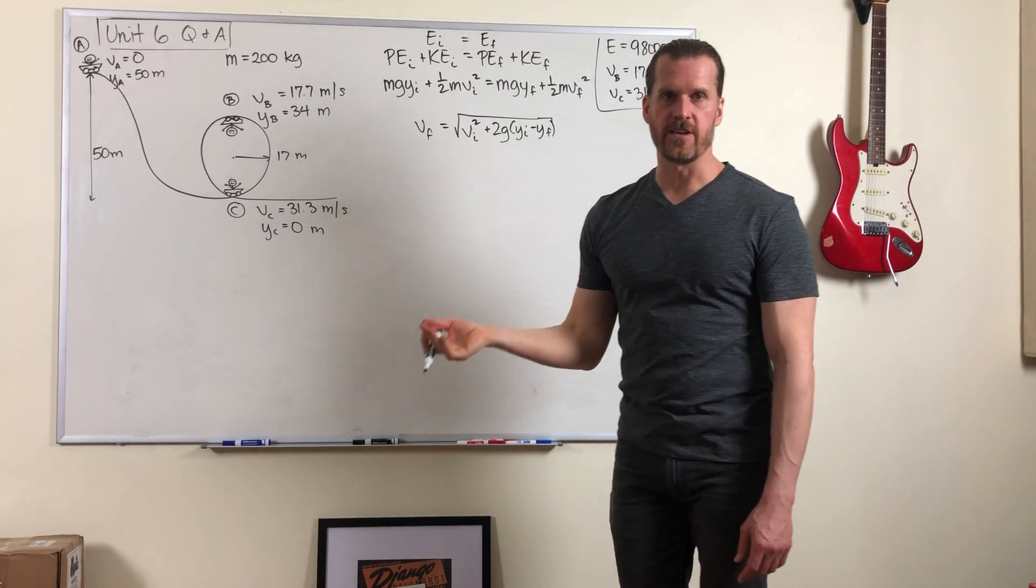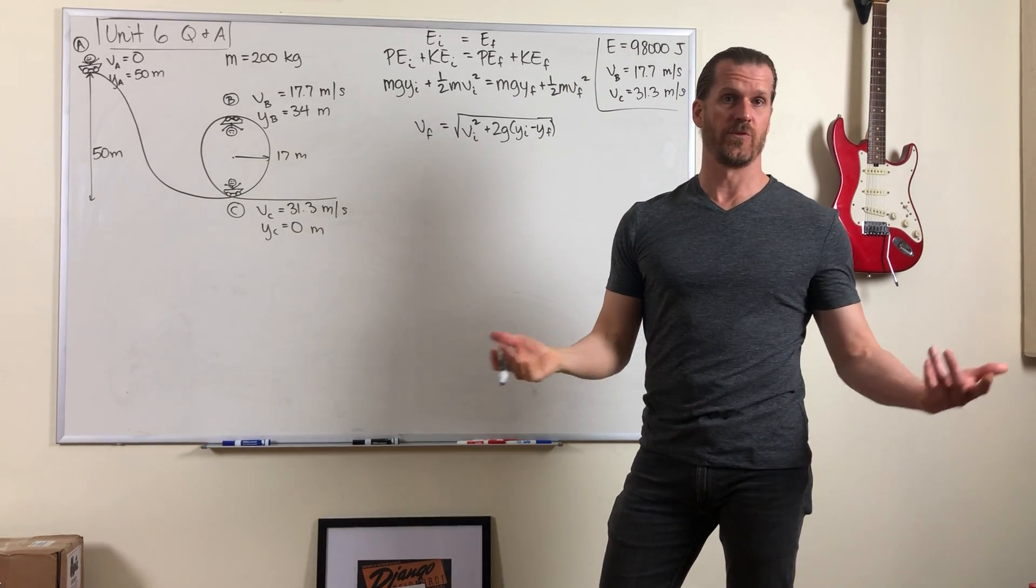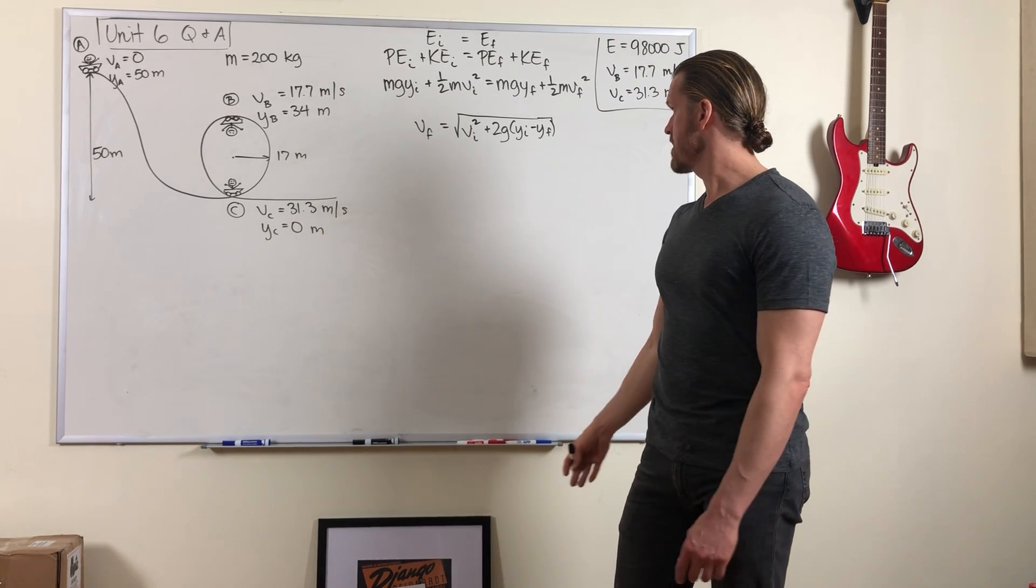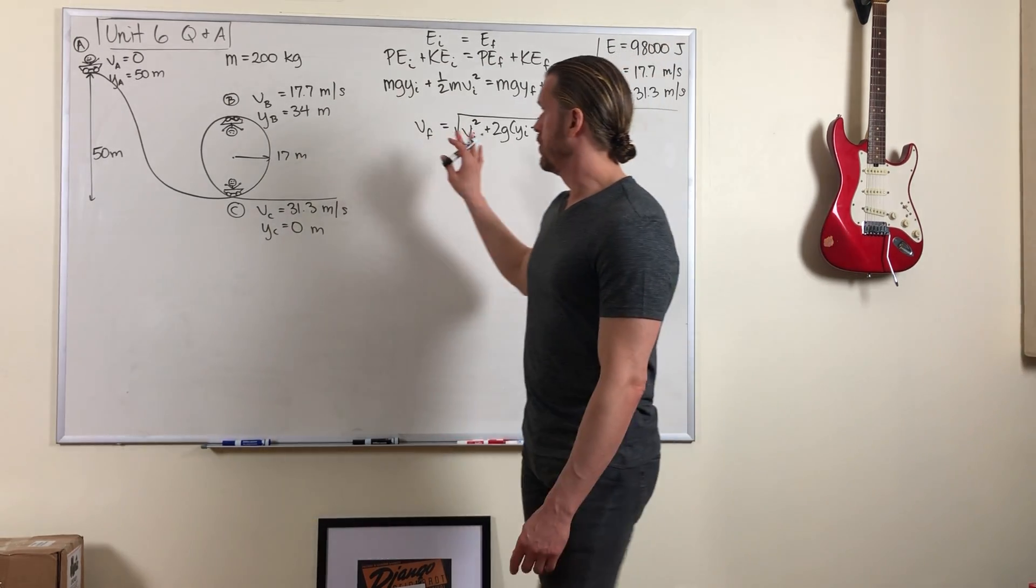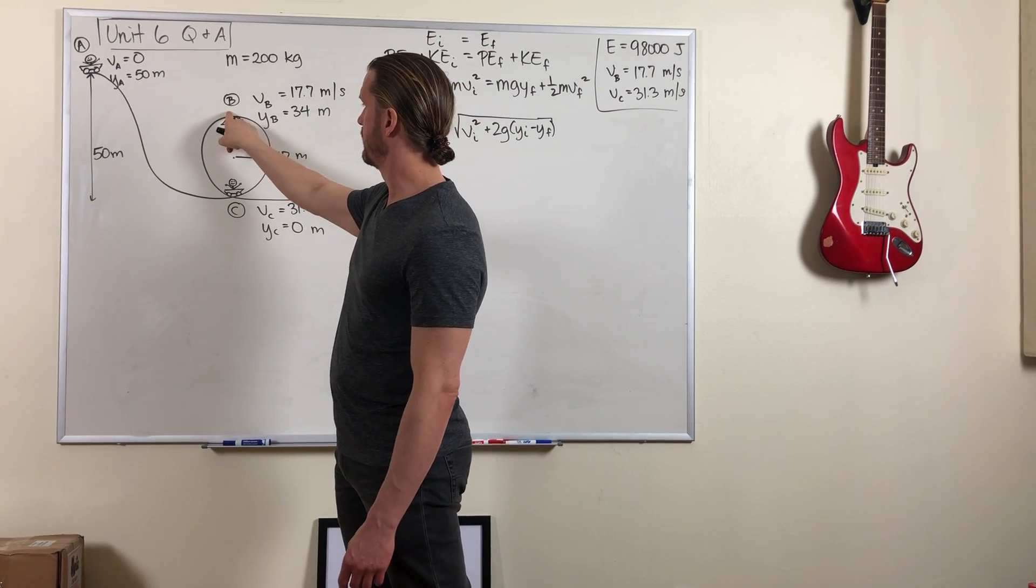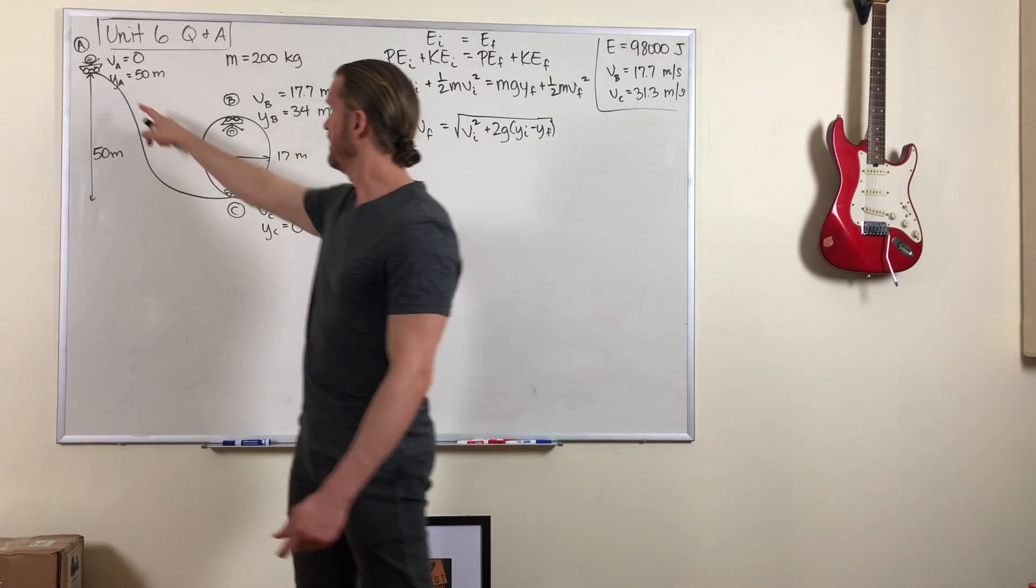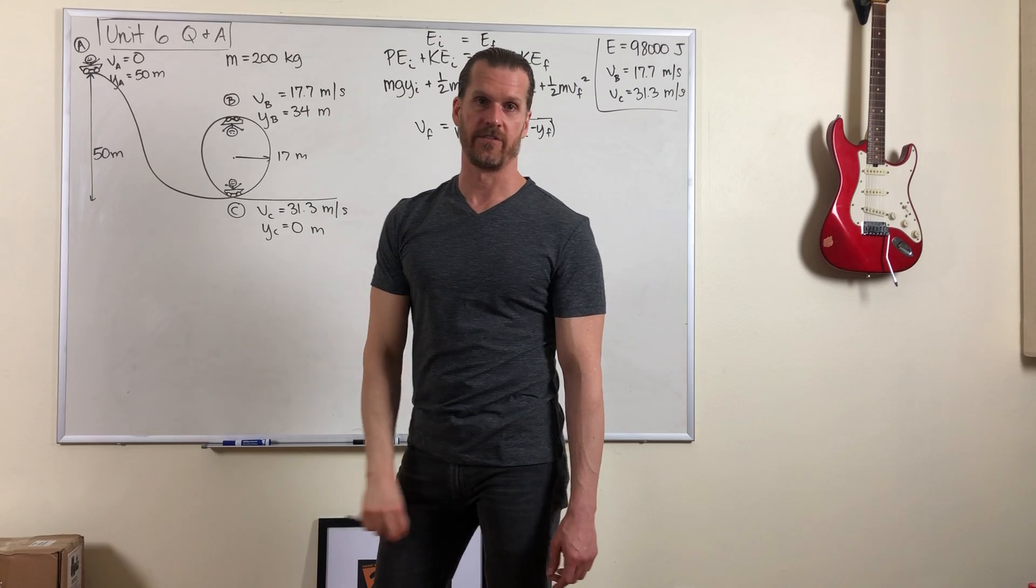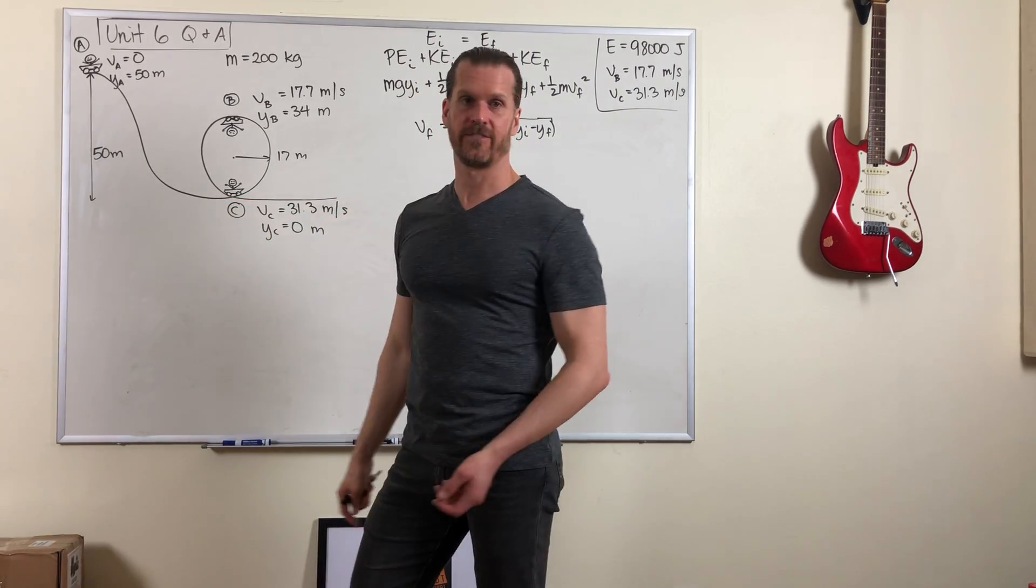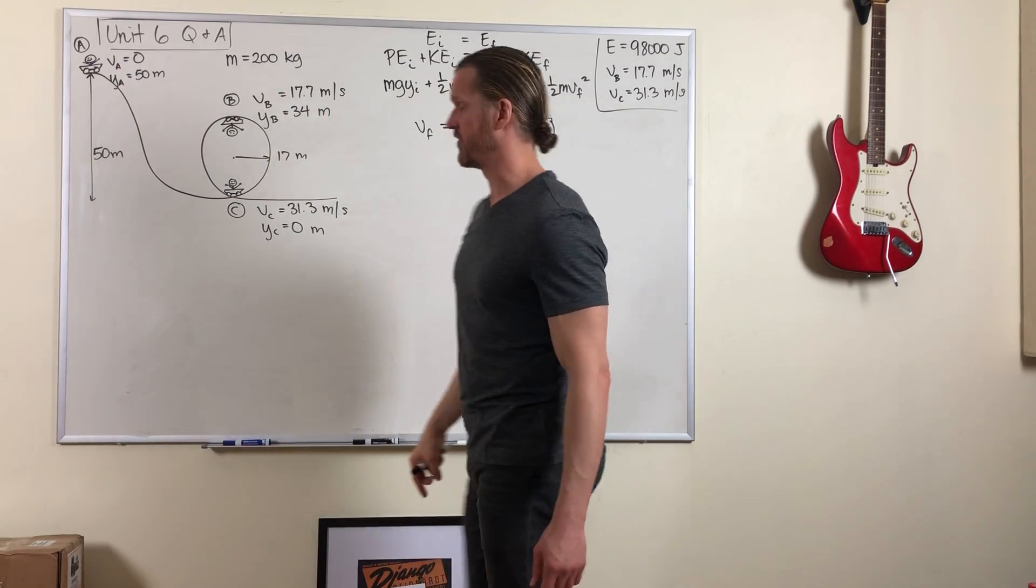And what's interesting here is that final and initial really could be anything. It could be any two points on the system. It doesn't matter. When we solved the problem the first time, we first looked at this position B at the top of the loop as a final position, and the top of the first hill as an initial position. And then we solved it again, looking at C as the final position and A as the initial position.